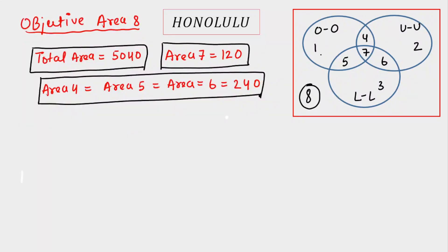Now all I have to calculate are areas 1, 2, and 3. Once I get those, I can find area 8 by subtracting everything from the total — since area 8 equals the total area minus the sum of all individual labeled areas.